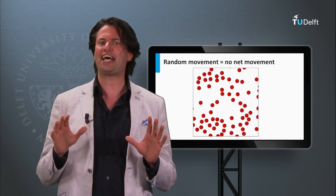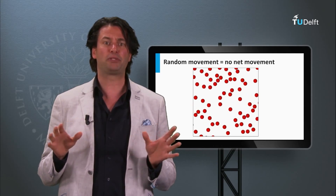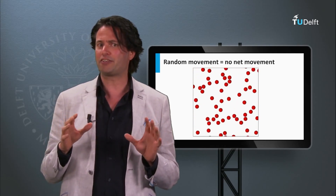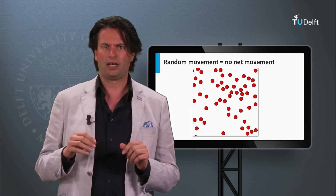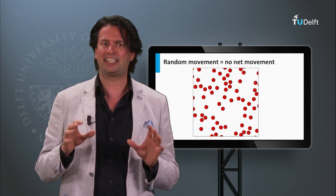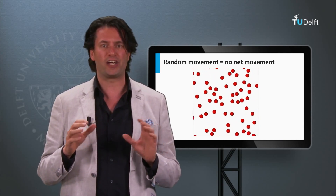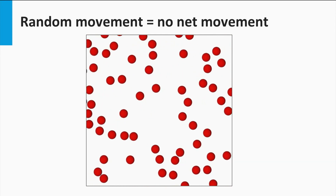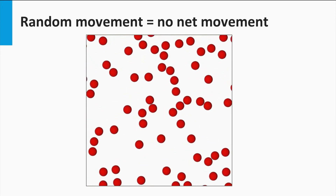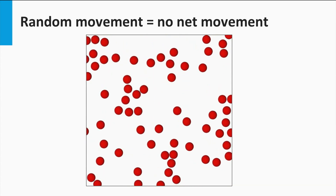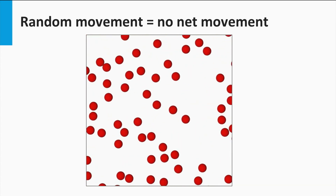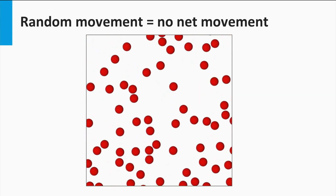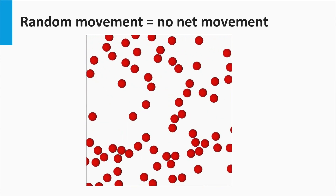Let's consider a free gas of particles at a temperature larger than absolute zero. In case of a free electron gas, these particles are electrons. The particles have kinetic energy and can move around freely. All particles move around in a so-called random walk — they move in random directions until they collide with another particle, after which both particles move in a different direction and their velocity is changed.